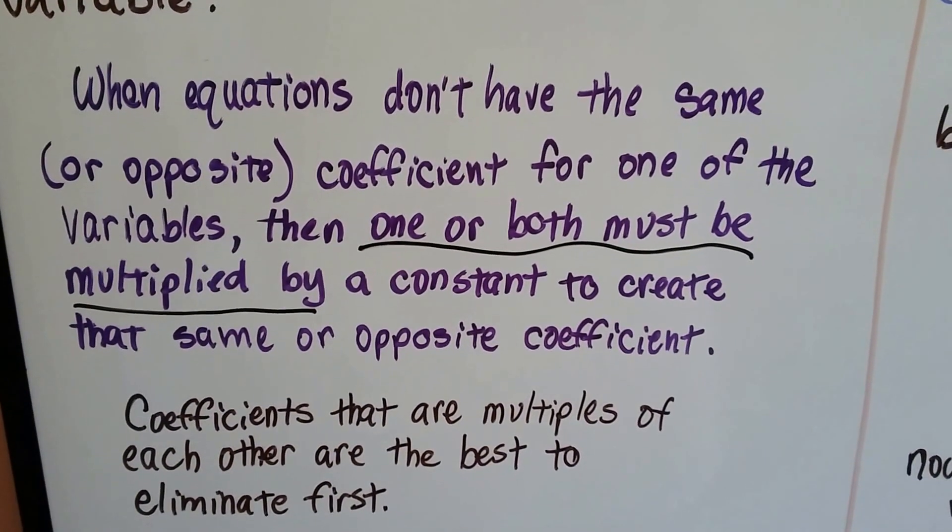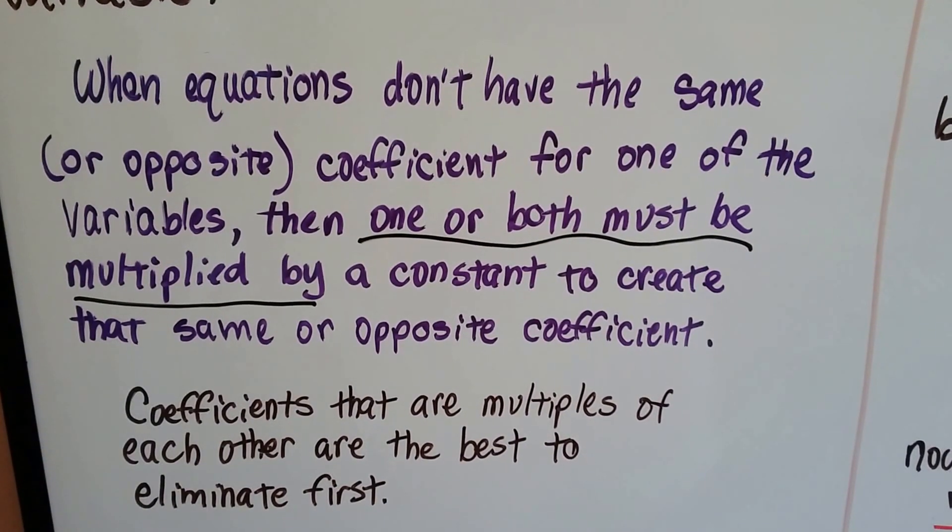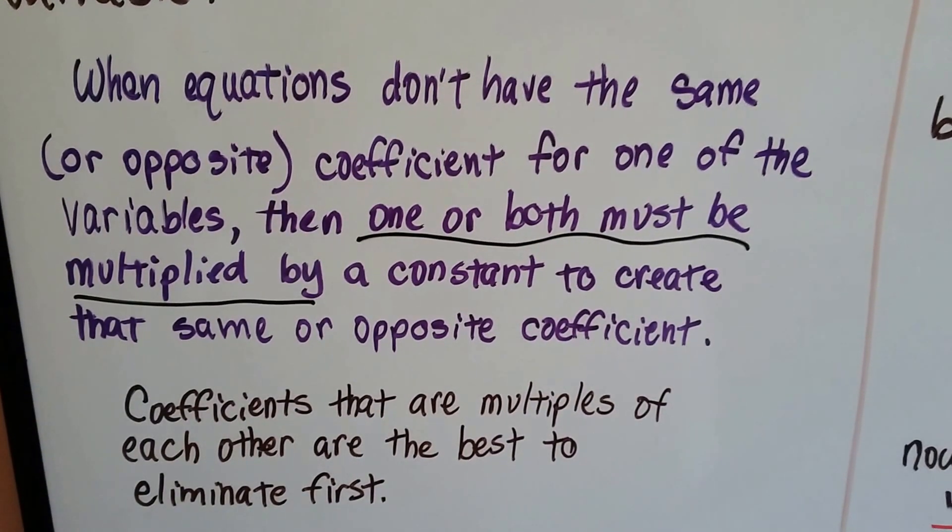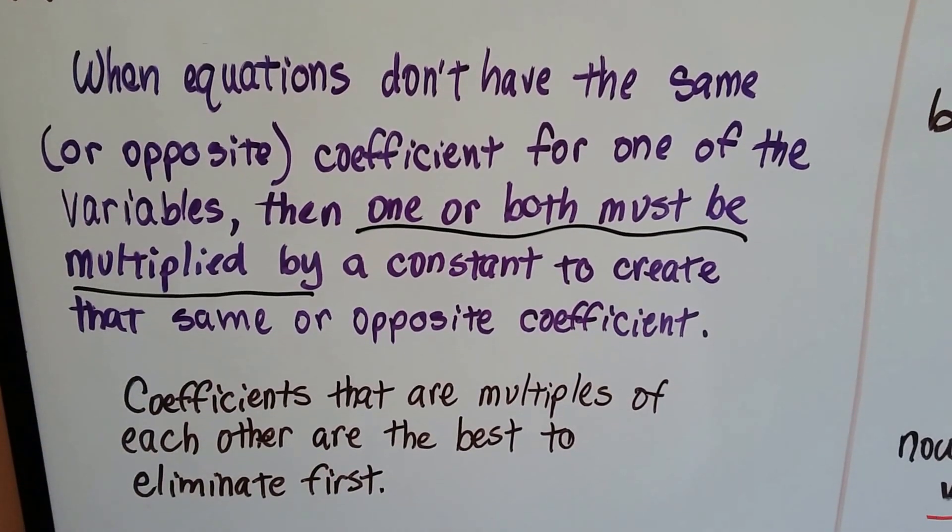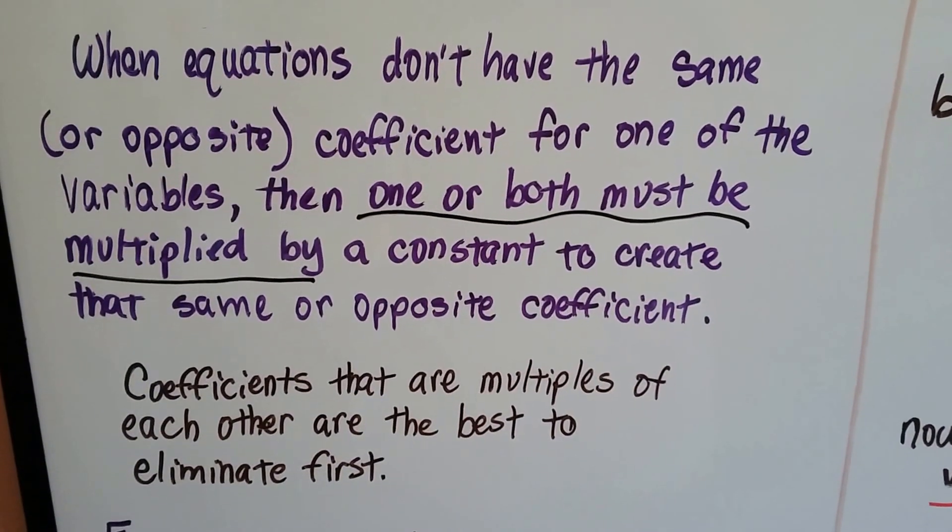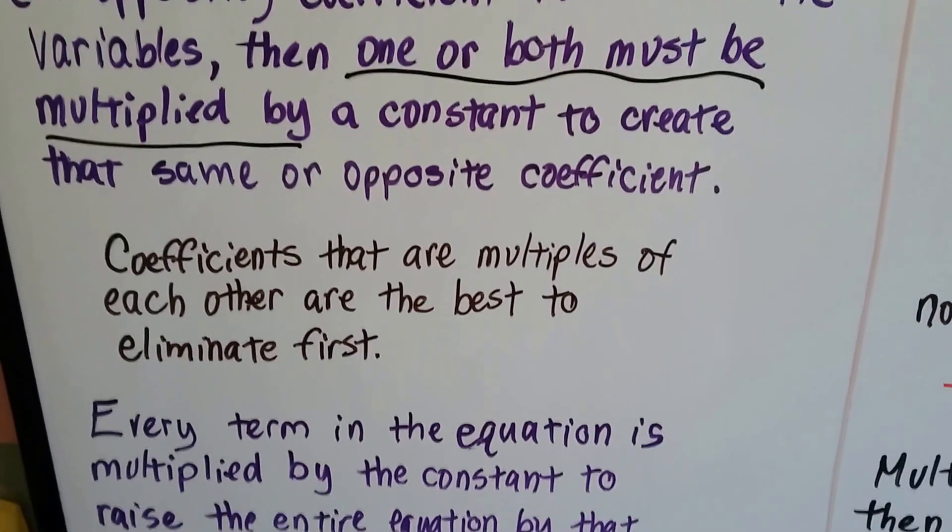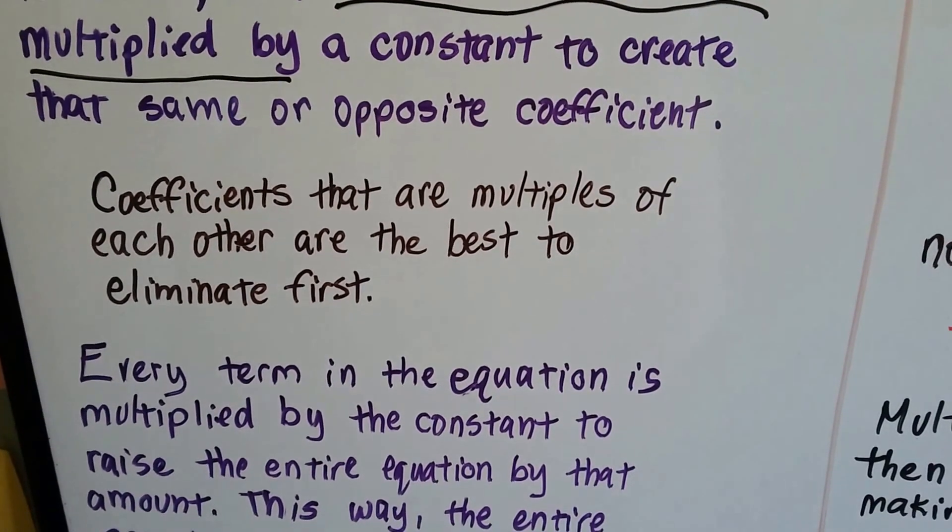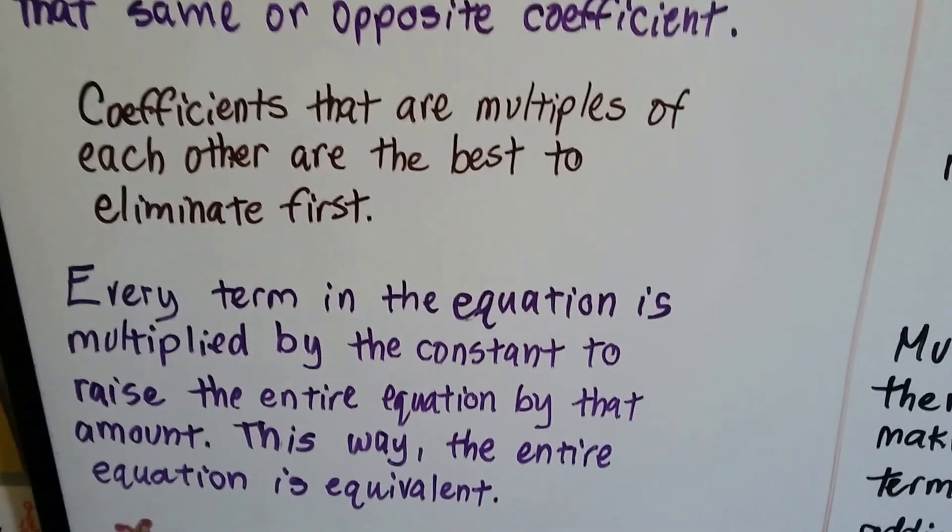When equations don't have the same coefficient or the opposite coefficient to create a zero pair for one of the variables, then one or both must be multiplied by a constant to create the same or opposite coefficient. Coefficients that are multiples of each other are the best to eliminate first.